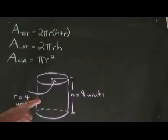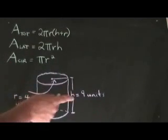In our example, the cylinder has a radius of 4 units and a height of 9 units.